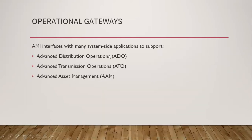The last component is operational gateways. Operational gateways covers three topics: advanced distribution operations, which covers distribution automation; advanced transmission operations, which includes operations related to transmission side management systems, for example PMU and load forecasting; and the third one is advanced asset management systems.